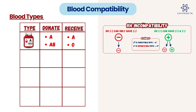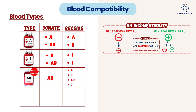Type A is able to donate to type A and type AB, and it's also able to receive from type A and type O. Type B is able to donate to type B and AB, and type B is also able to receive from type B and type O. Type AB is considered the universal recipient — AB can receive blood from any type: A, B, AB, and O. But it is only able to donate to another AB.